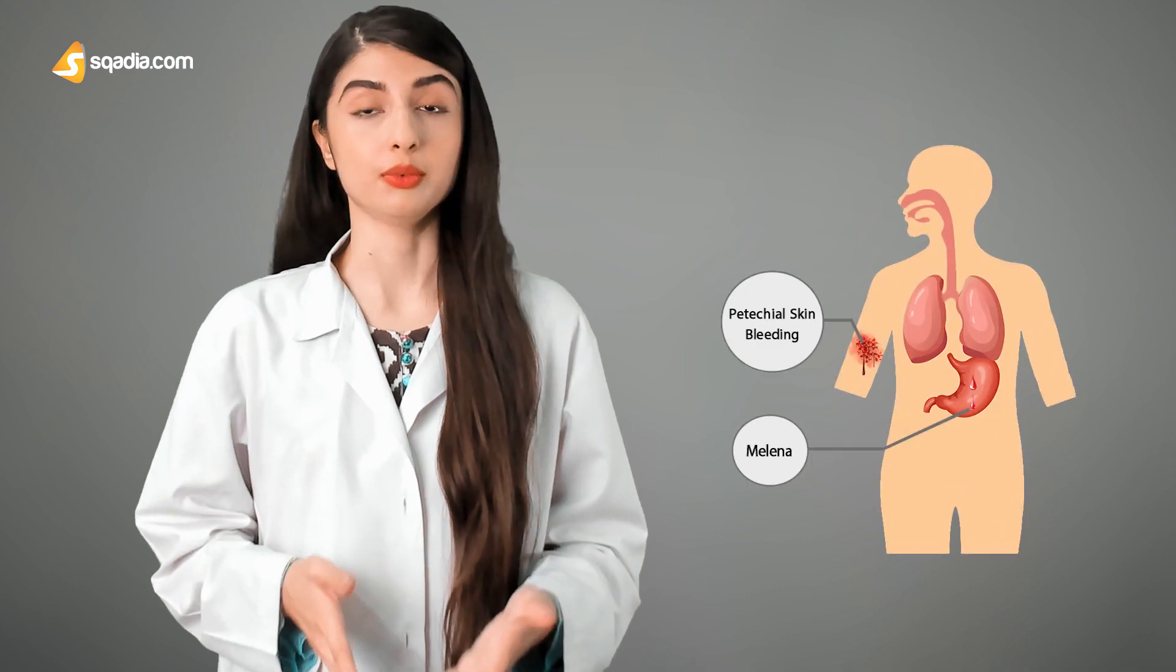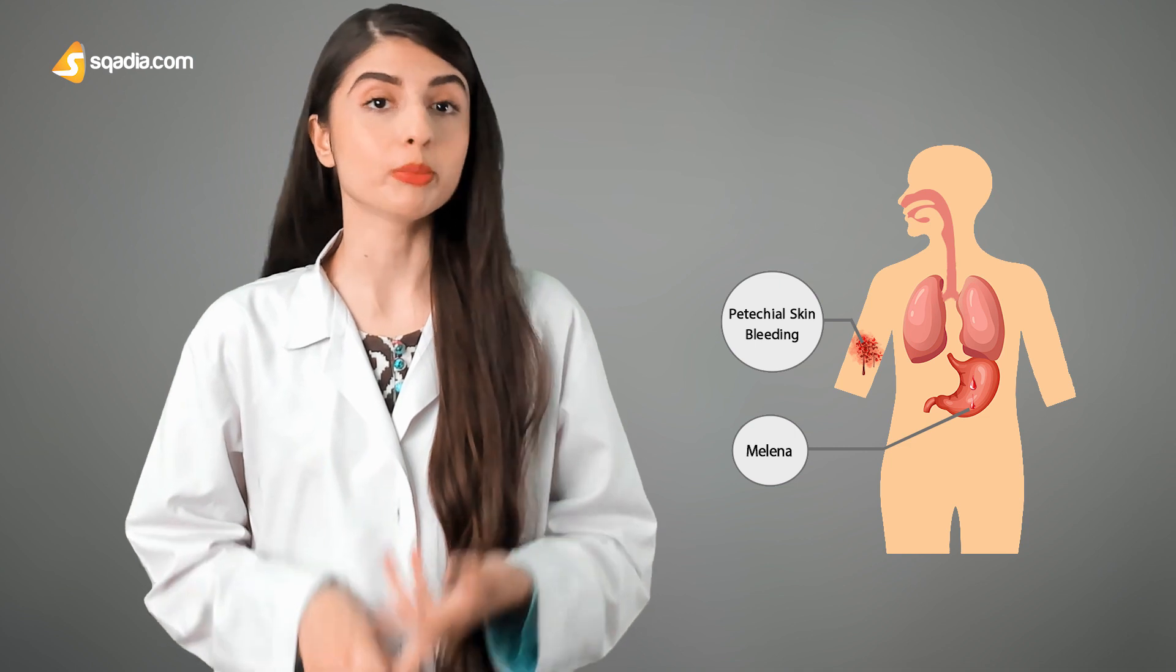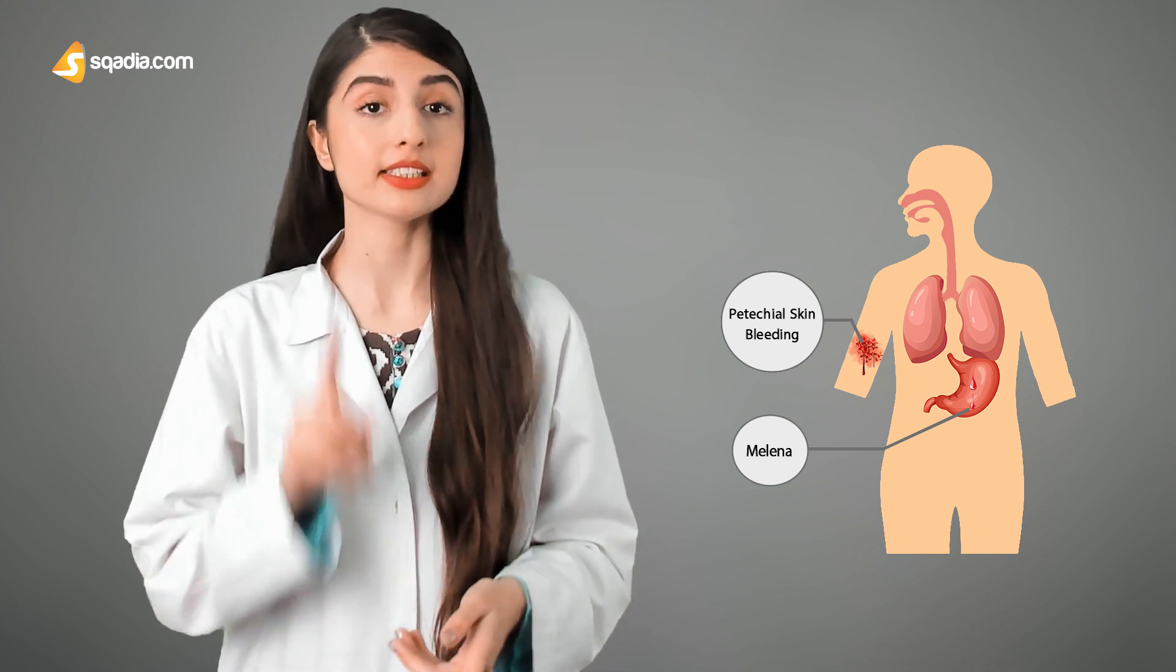The first signs are usually petechiae and bruising resulting from a low platelet count, and dark-colored bloody feces or melena may also be observed indicating internal bleeding.